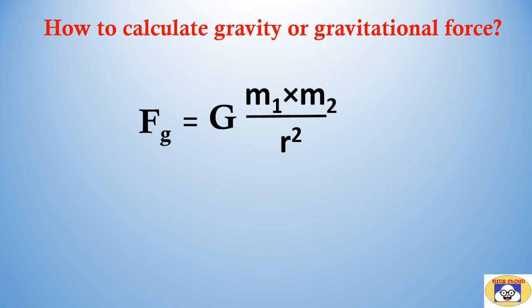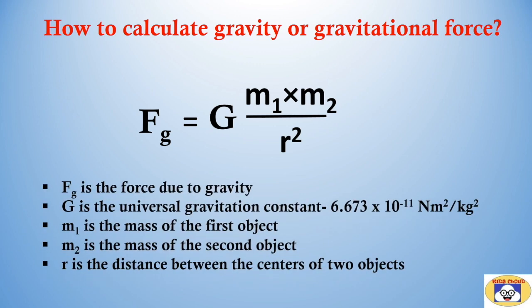We can calculate gravity or gravitational force by using this equation: Fg equals G m1 m2 divided by R square. This equation is called Newton's law of gravity, where Fg is the force due to gravity.